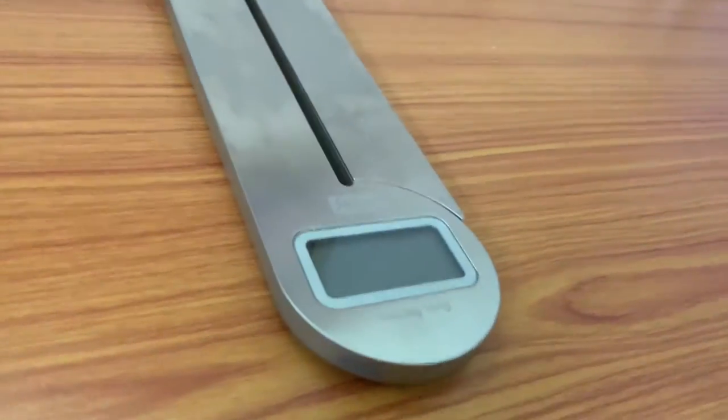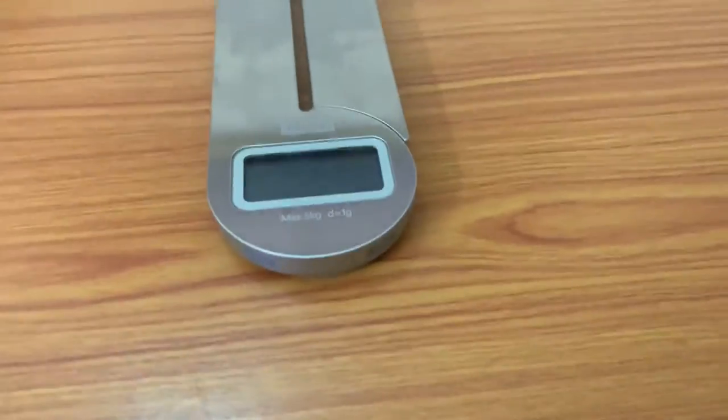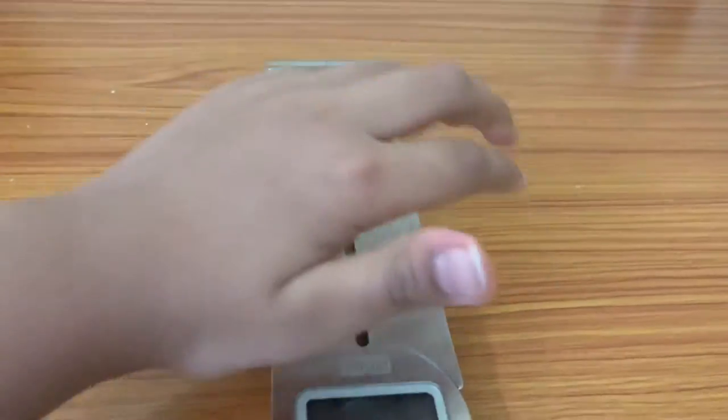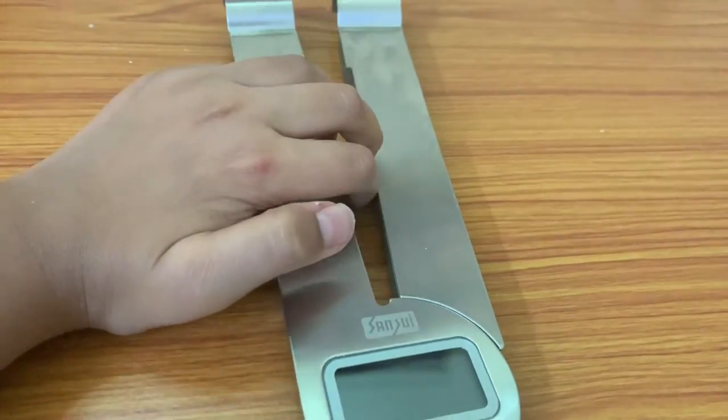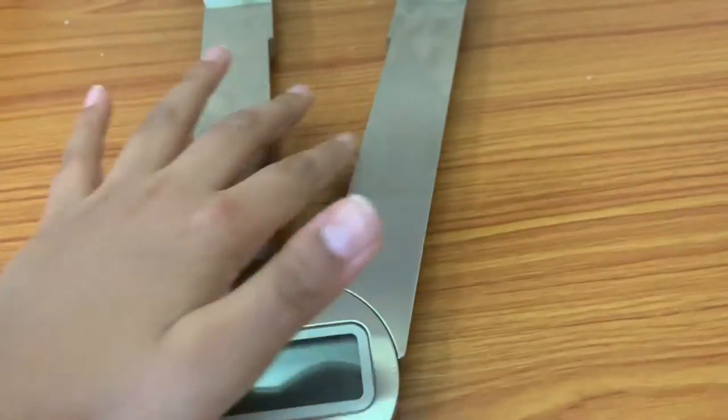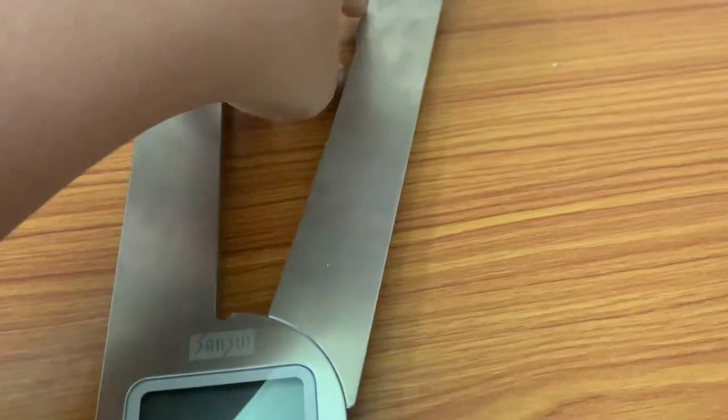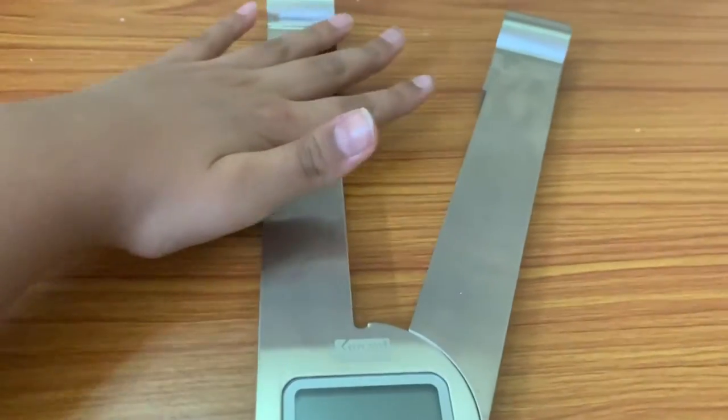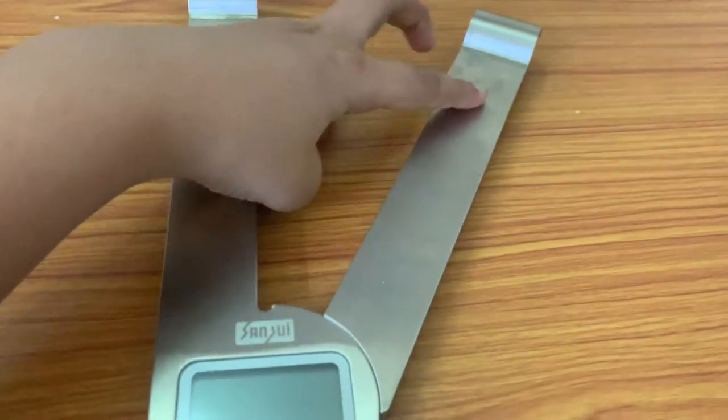So this is the weighing scale. I know it looks a bit weird. This is specially for engine homes, and this is the shape so that if you have any bowls or plates, you can spread this out like this and you can measure it.